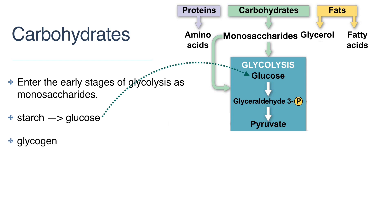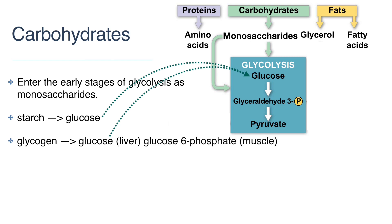Glycogen is a polysaccharide that is formed in animal liver and muscle cells. When blood glucose levels are low, the pancreas secretes a hormone that stimulates the hydrolysis of glycogen. In liver cells, glycogen is broken down into glucose, which is released into the bloodstream and enters glycolysis at the very start. However, in muscle cells a different enzyme phosphorylates glycogen as it's broken down, producing glucose-6-phosphate, which enters the second step of glycolysis.